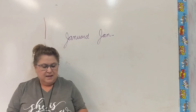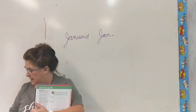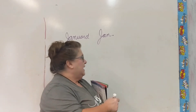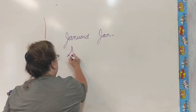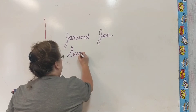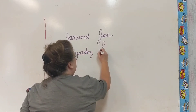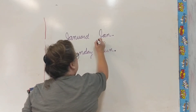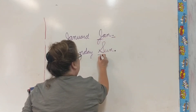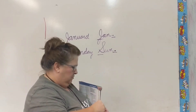And then part B: it says write the abbreviation for each day of the week. Place a period at the end. So for your days of the week as well — Sunday, our first day of the week — when we write the abbreviation, it's capital S-U-N period. So you have to remember your capital letter and your period on your abbreviations.